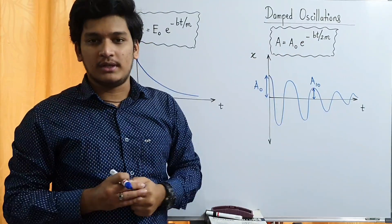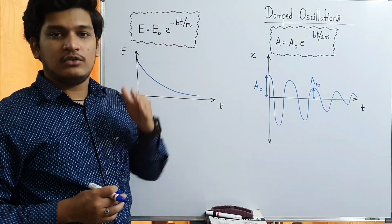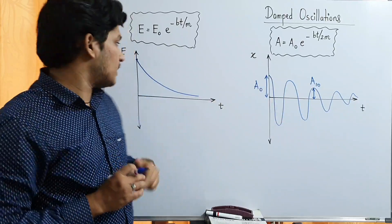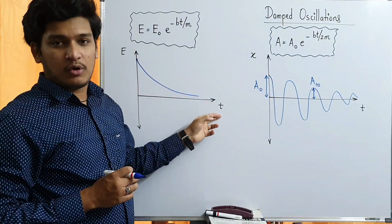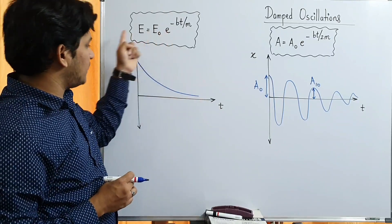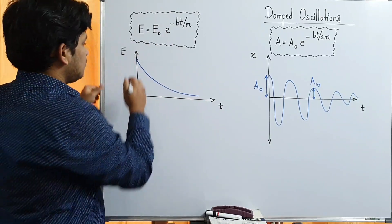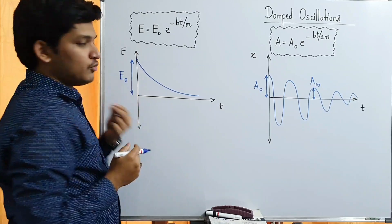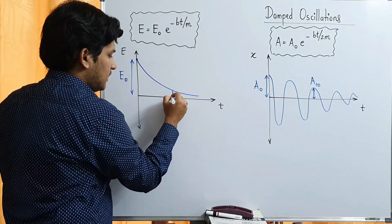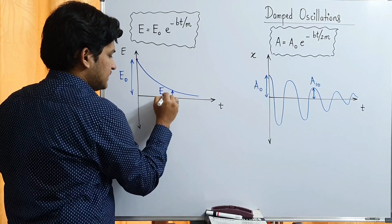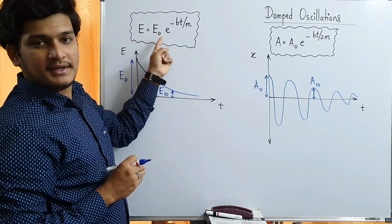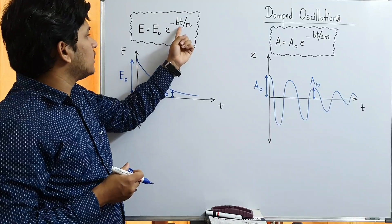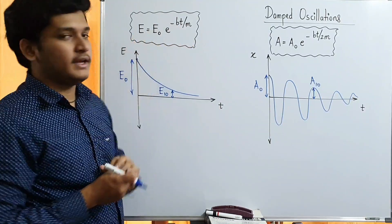Waisa hi relation energy ka bhi hai. Kyunki energy damped oscillations mein continuously decrease ho rahi hai and finally zero hogi. To agar aap energy versus time ka graph plot karo ge to aisa kuch aega - exponentially decrease ho rahi hai energy. Initially jo energy hai usko hum log E₀ bol denge. Let's say after 10 seconds itni energy bachti hai, usko E10 bol denge. Yeh hai relation between initial energy and energy after time t. Agar aapko 10 seconds baad chahiye ya 12 seconds baad chahiye, t ka value put karo aur E ka value mil jayega.